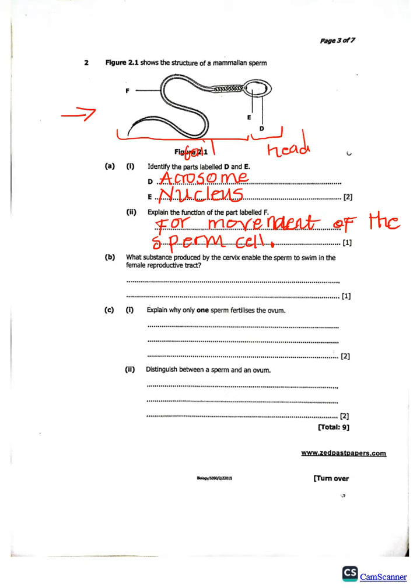Now let's look at question B: what substance produced by the cervix enables the sperm to swim in the female reproductive tract? The sperm is just a cell; there are substances produced by both the male and female in which the sperm cell swims. The substance produced by the cervix is called cervical mucus — a liquid that enables the sperm cell to swim.